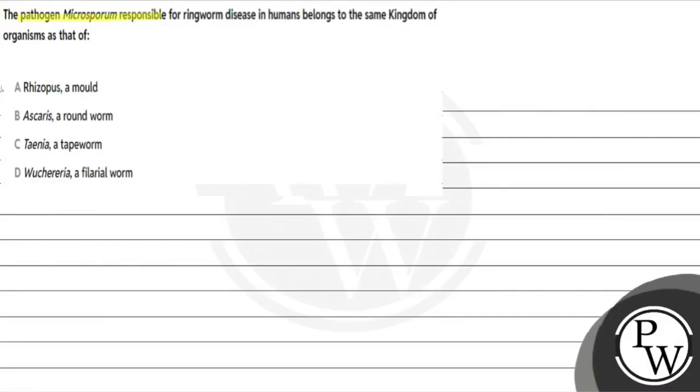The question says the pathogen Microsporum responsible for ringworm disease in humans belongs to the same kingdom of organisms as that of. Microsporum, which is a pathogen, which causes ringworm disease, it belongs to which kingdom. It has been given, we need to tell which one.